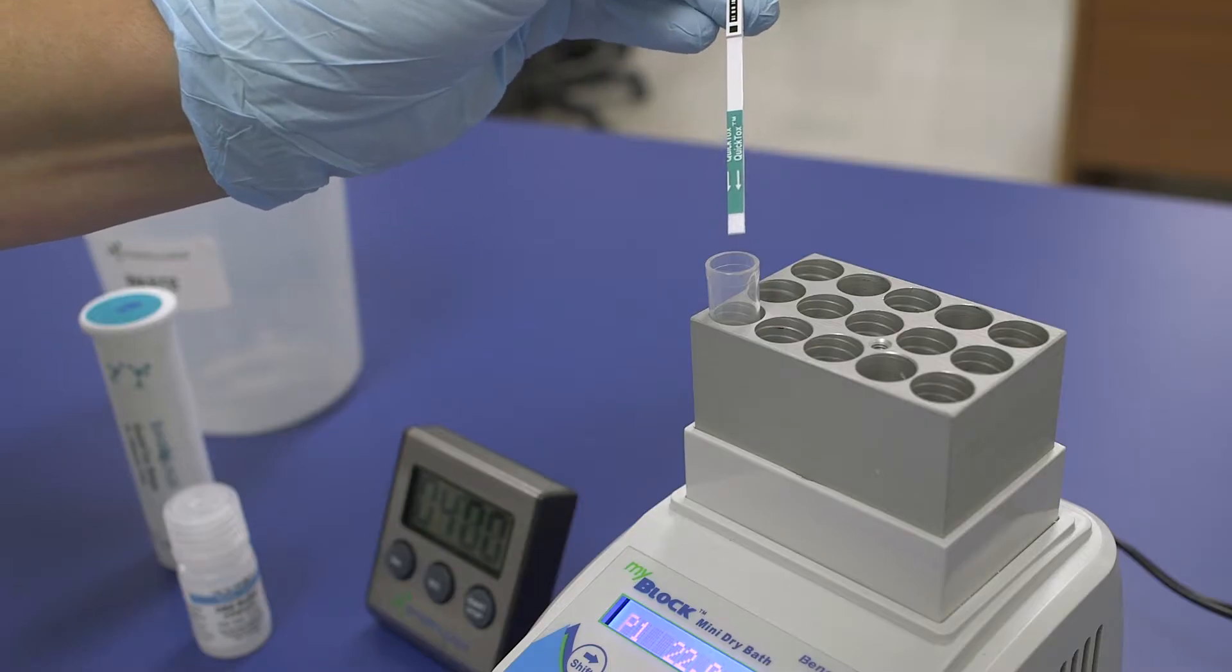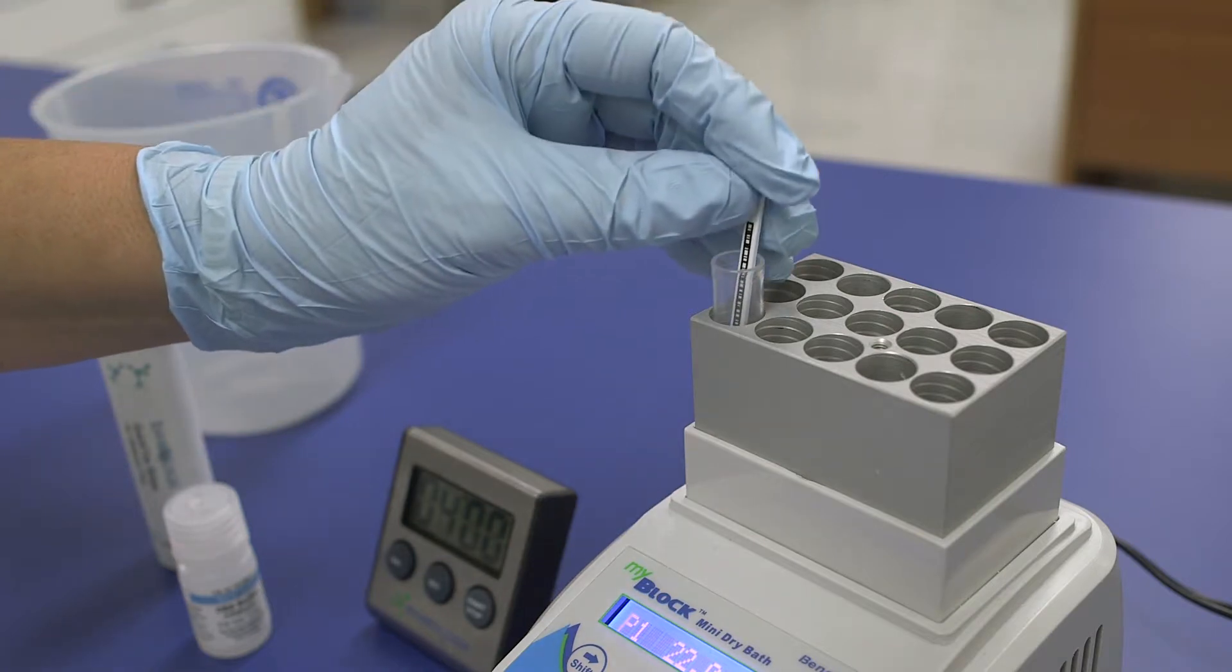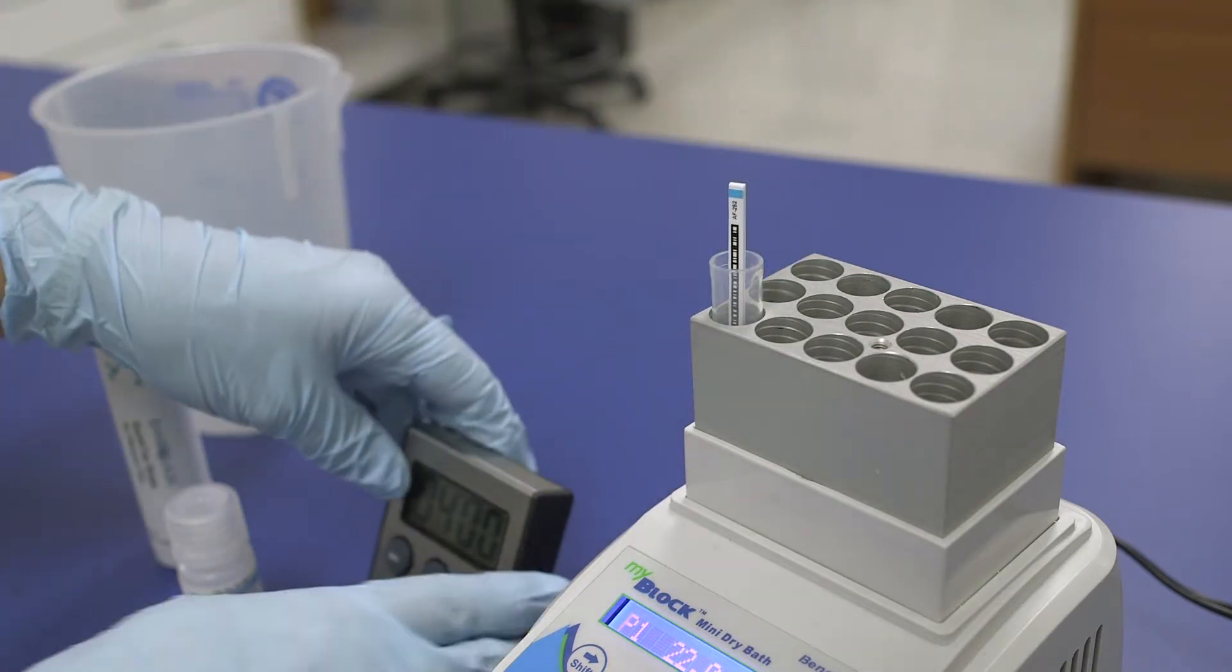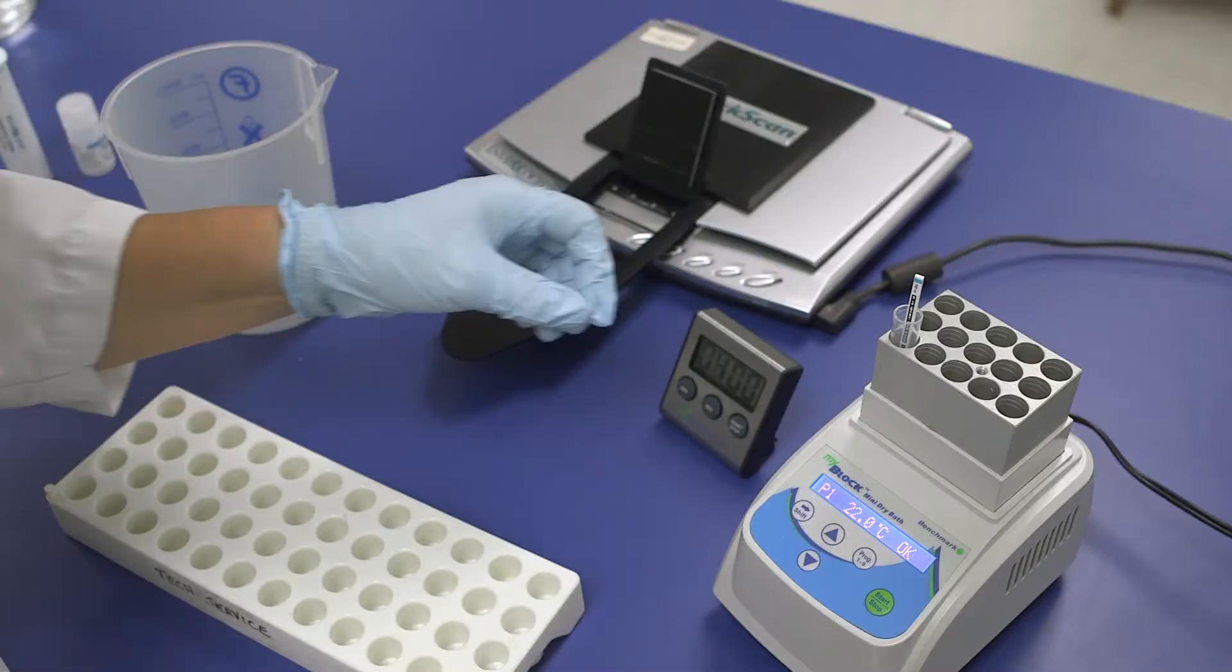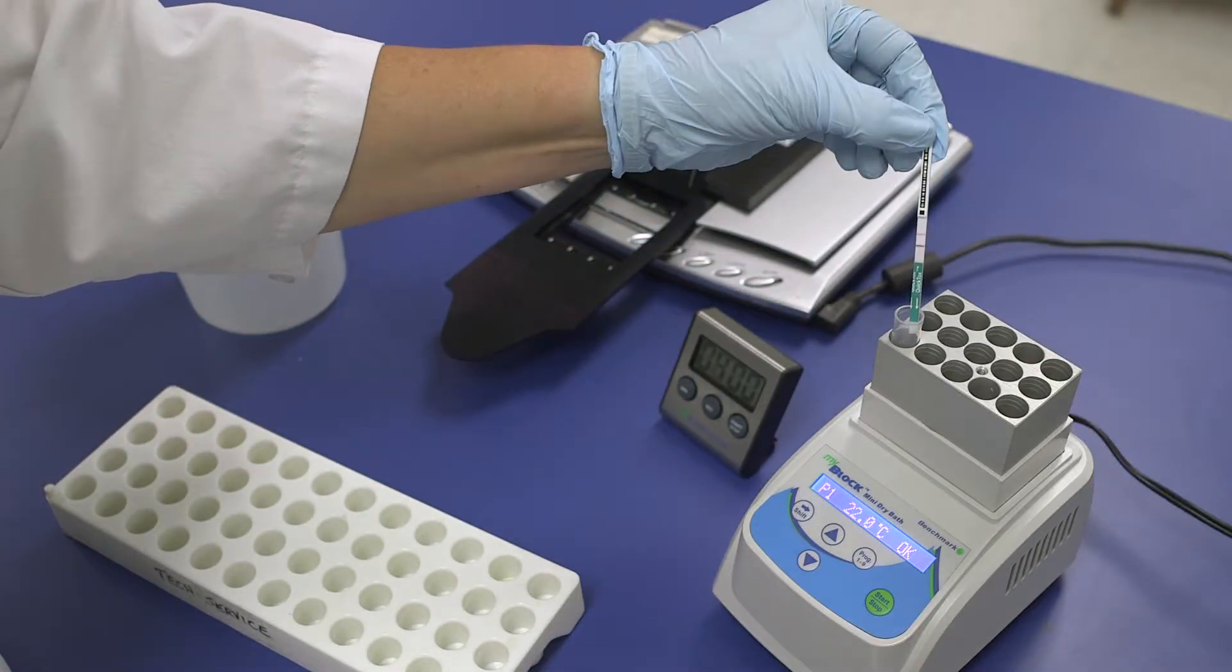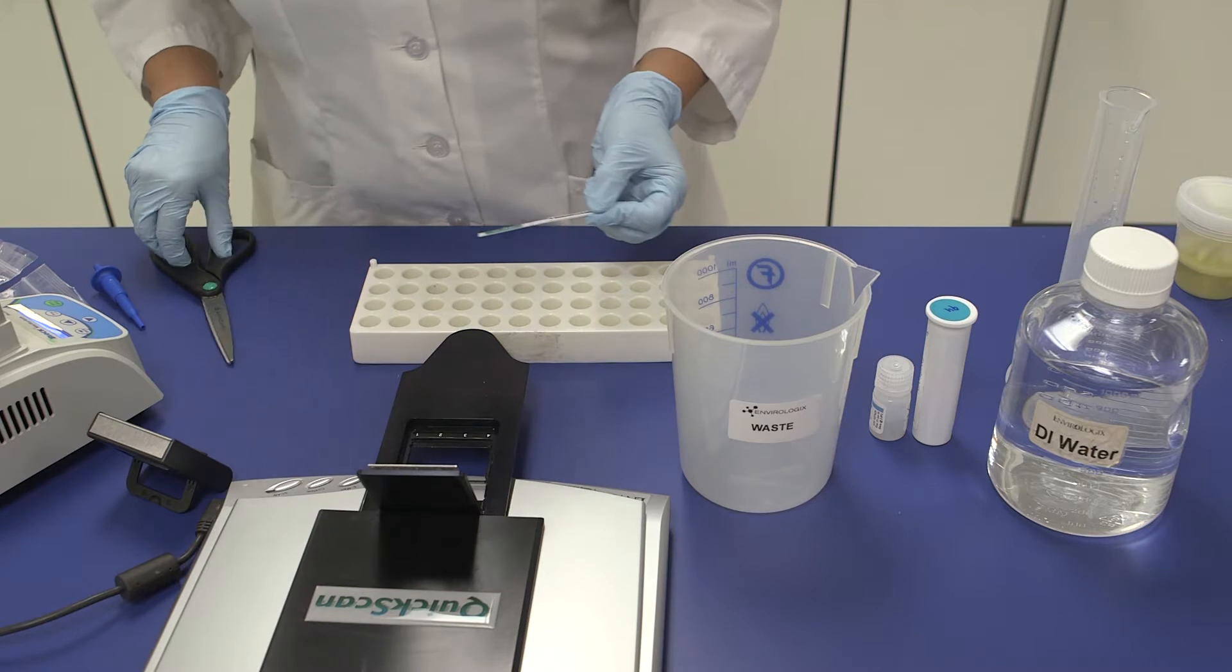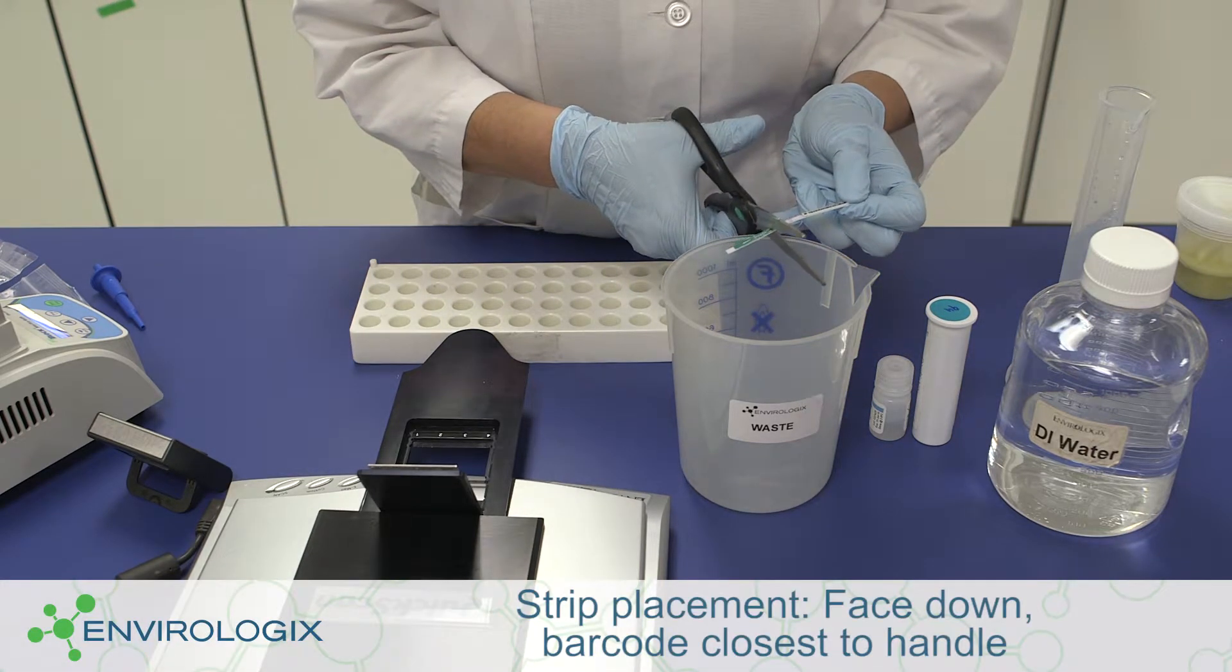Step 4. Add a new test strip and allow it to react for 4 minutes. Step 5. At exactly 4 minutes, remove the test strip from the tube. Cut off the tail pad and immediately place the strip in the quick scan reader.